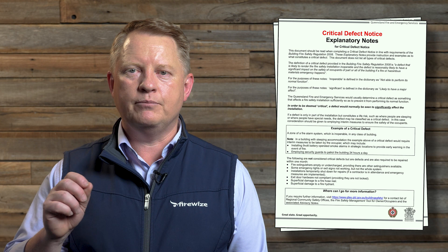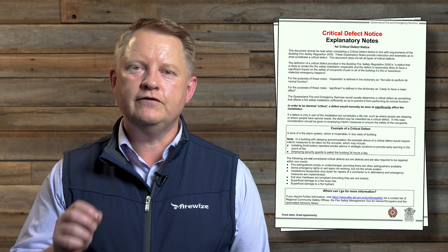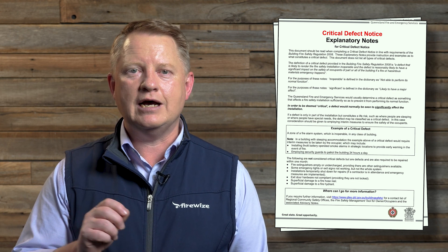If a person carrying out the maintenance of a prescribed fire safety installation becomes aware, or ought reasonably to be aware, of a critical defect in the installation, then they must give the occupier of the building a notice about the defect using an approved form called a critical defect notice. This form must be provided to the occupier within 24 hours after the maintenance activity has been performed.